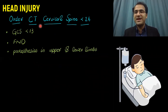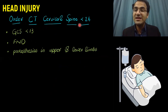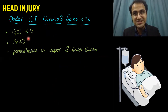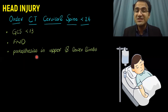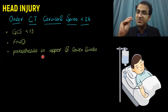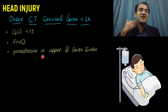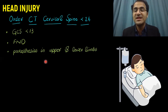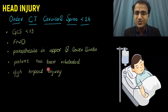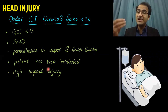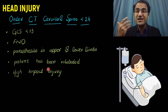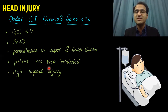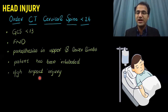Order a CT of the cervical spine within one hour if the GCS is less than 13, if there is a focal neurological deficit, or if there is paresthesia (tingling) in the upper or lower limbs indicating cervical spinal cord involvement. Cervical spine CT is also indicated if the patient has been intubated — due to the high risk of cervical injury during intubation — or in high-impact injuries.